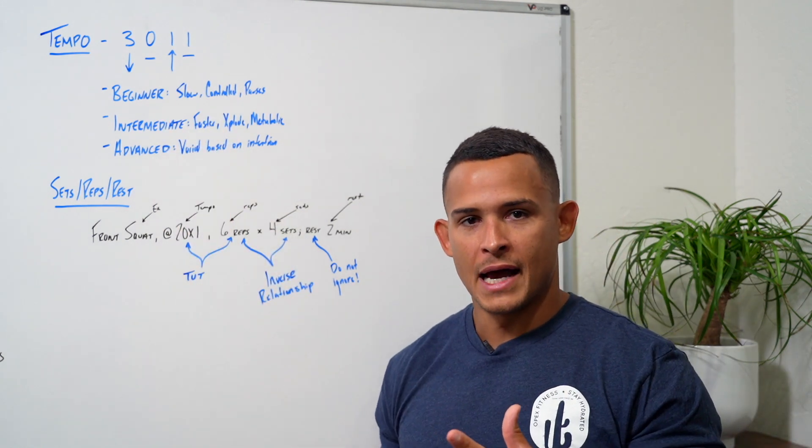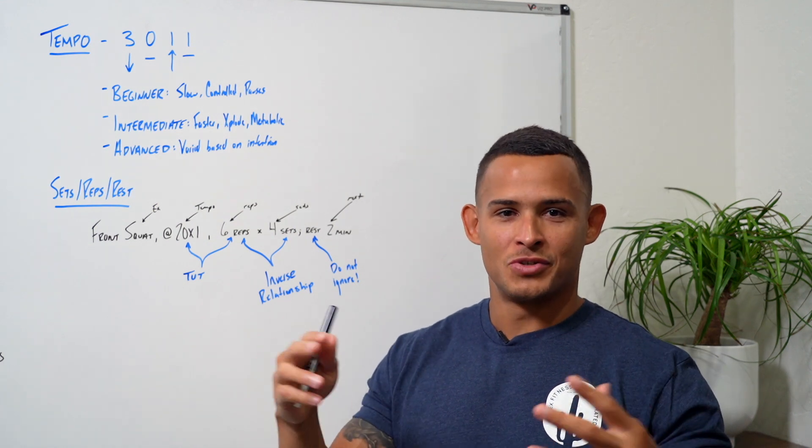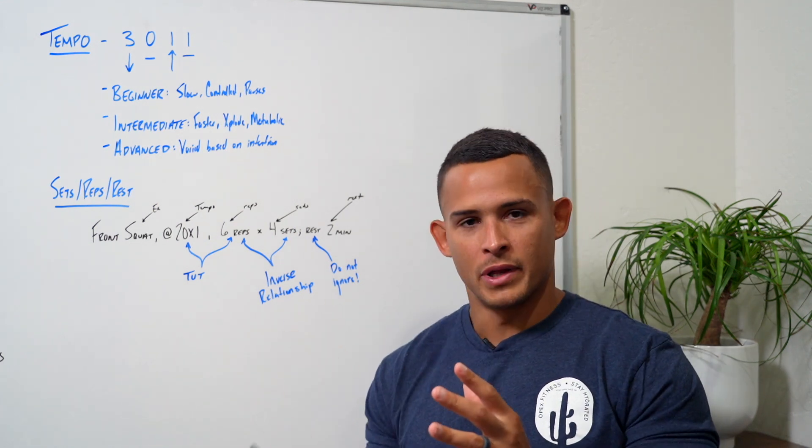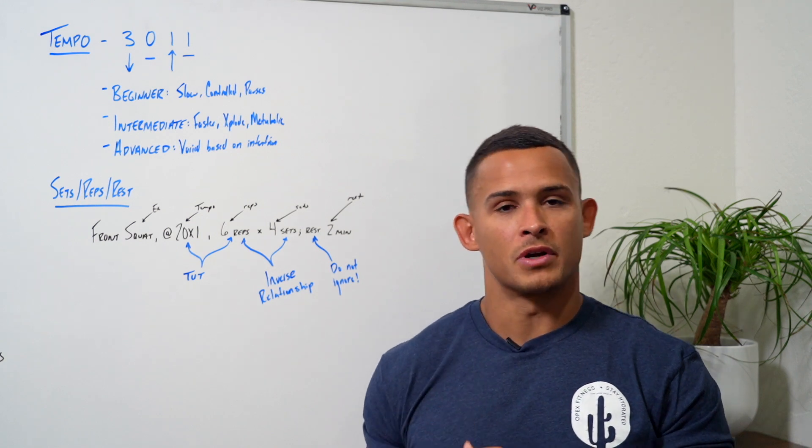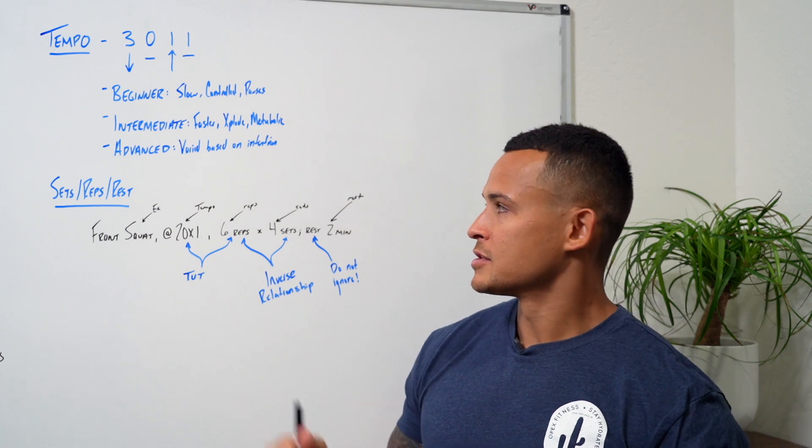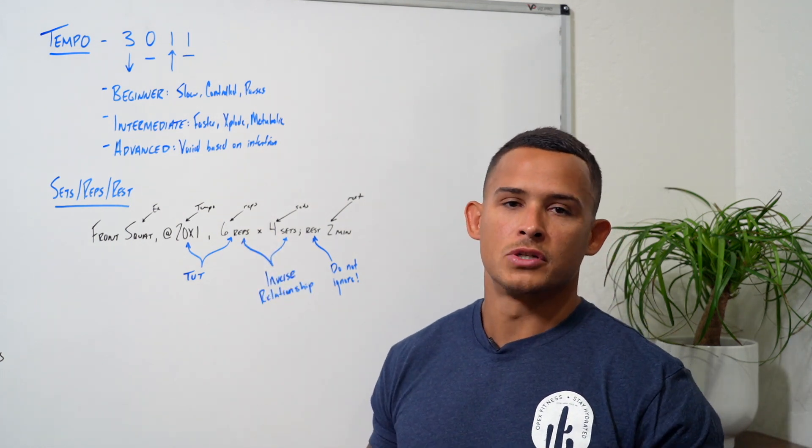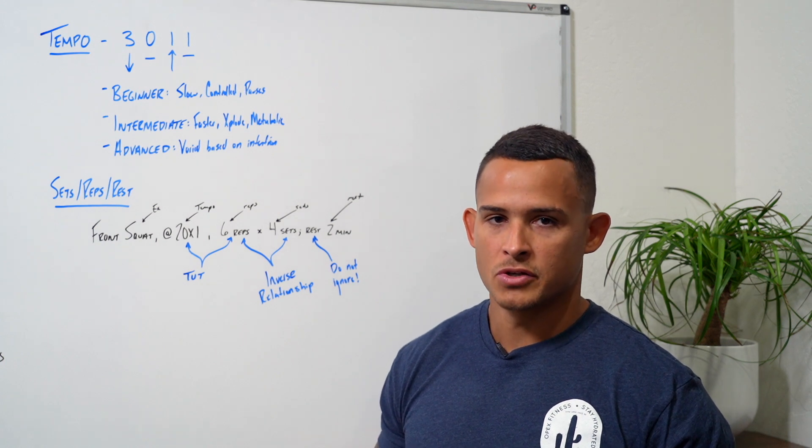We're controlling on the way down, but not so slow where we're elongating the musculature to a point of fatigue, but we're controlling enough where we can own that bottom position. We're exploding out of the bottom of that back squat, and we can do a heavy triple, double, or even single. So with the advanced client, it just varies in terms of how you want to prescribe tempo based on the intention of the training program.